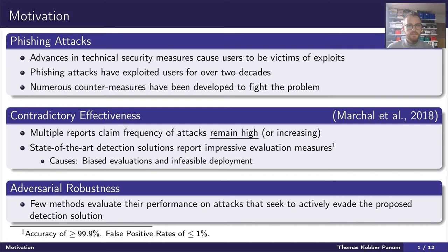This work takes base in the social engineering attack called phishing, which has existed for more than two decades. Within this timeframe, numerous countermeasures have been proposed to fight the problem, particularly phishing detection solutions which seek to automate the discovery of these attacks to prevent them from reaching their victims. Recently, there have been reports claiming that the frequency of phishing attacks remains high or even increasing, which is a little bit in contradiction with the reported results of phishing detection solutions in the academic world, where we have seen accuracies of more than 99% and false positive rates of less than 1%.